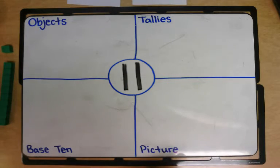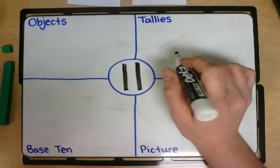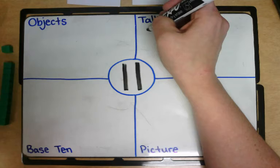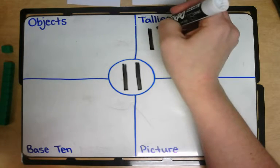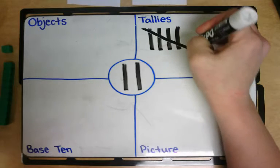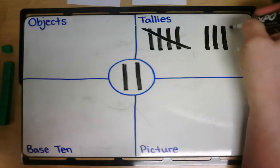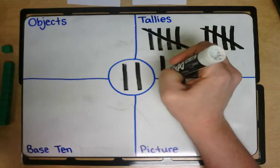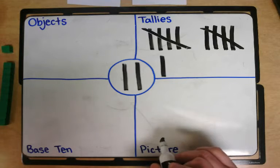I could also show you eleven using tallies, which is something that you've seen me do during calendar. Tallies come in a group of five and there can't be any more than five in a group, so let me show you what eleven tallies looks like. One, two, three, four, five. The fifth one goes across. Six, seven, eight, nine, ten, eleven. We have five, ten, eleven tallies.